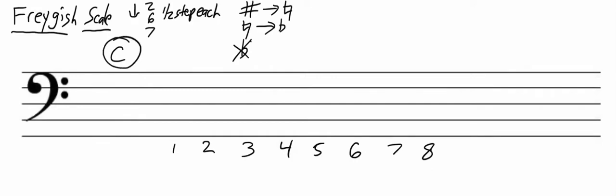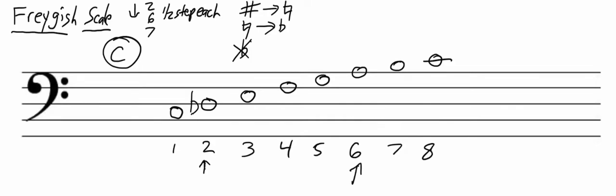Let's start with the key of C. We'll start with our C major scale: C, D, E, F, G, A, B, C. The second note is D, so we're going to lower it one half step and make it D-flat. The sixth note is A, so we will lower that one half step and make it A-flat. The seventh note is B, so we will lower that a half step and make it B-flat. And there is our C Fregish scale.